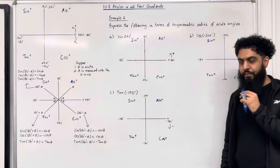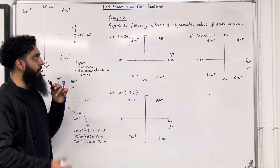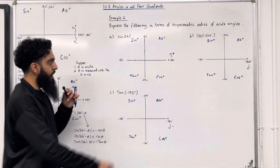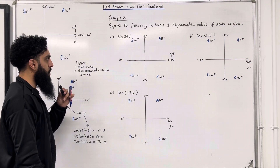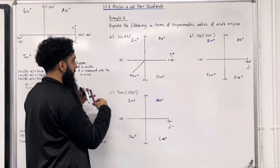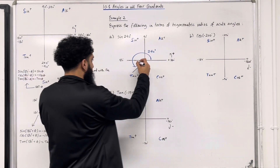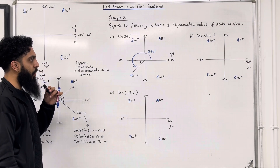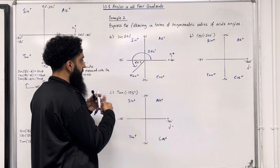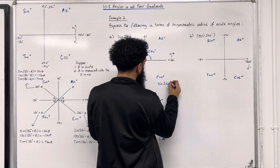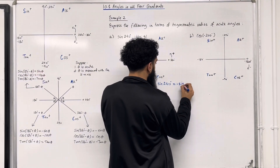Example 2: express the following in terms of trigonometric ratios of acute angles. Part A: sine 240 degrees. Drawing 240 degrees on the CAST diagram — from the positive x-axis going anti-clockwise — 240 degrees lands here. The acute angle with the x-axis is 240 minus 180 = 60 degrees. In this quadrant sine is negative, so sine 240 degrees equals minus sine 60 degrees.